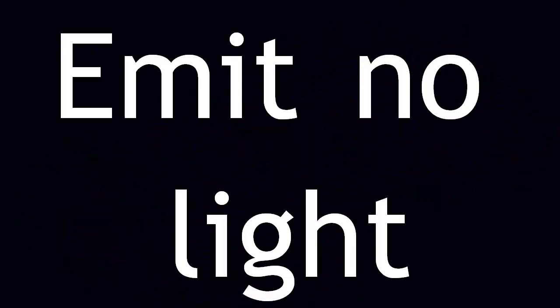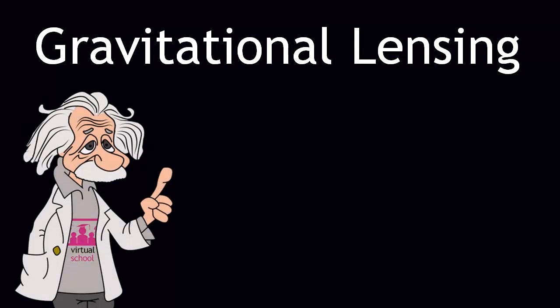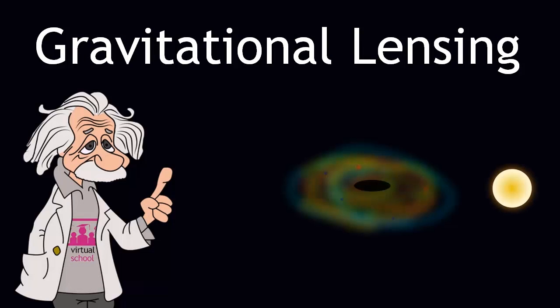Black holes in nature emit no light, yet we know they exist. How? Well, we see evidence of black holes through a process of gravitational lensing predicted by Albert Einstein in 1936, where light behind the black hole or other massive object is bent and distorted due to its gravitational field.